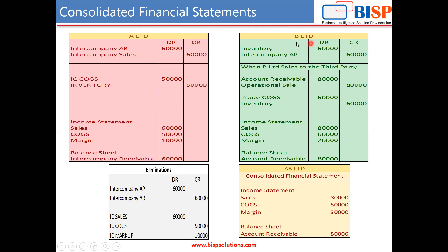In the books of B Limited, they had received inventory from A Limited, so they debited inventory by 60,000 and showed an intercompany payable of 60,000 to A Limited. B Limited then sold that inventory to a third party, recording an account receivable of 80,000 and crediting revenue by 80,000. Their trade cost of goods sold is 60,000 and they credited inventory by 60,000. So on B Limited's income statement, sales reported is 80,000, cost of goods sold is 60,000, and the margin is 20,000. On the balance sheet, account receivable will show 80,000.